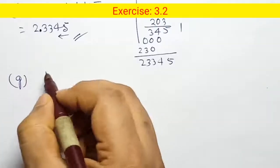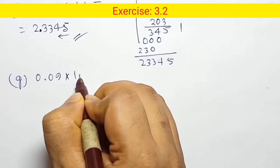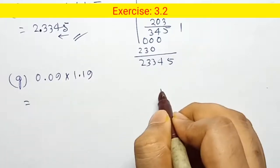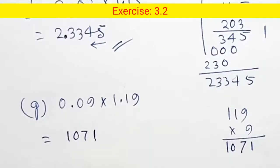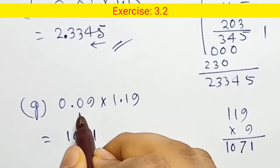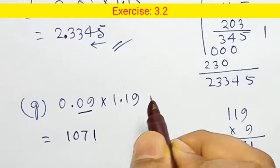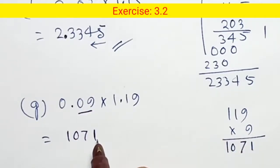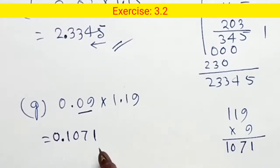0.09 into 1.19: multiply and get product 1071. For the decimal point: count the decimal places — one number has 2 decimal digits and the other has 2, total 4. Place decimal 4 digits from the right, adding leading zeros as needed.